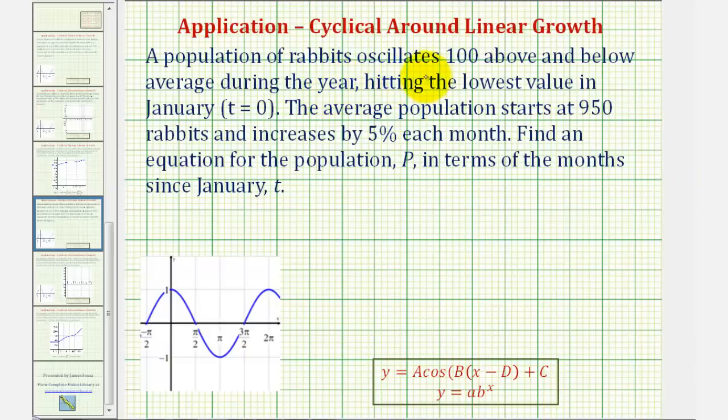A population of rabbits oscillates 100 above and below average during the year, hitting the lowest value in January, which is when t equals zero. The average population starts at 950 rabbits and increases by 5% each month. We want to find an equation for the population p in terms of t, where t is the number of months since January.